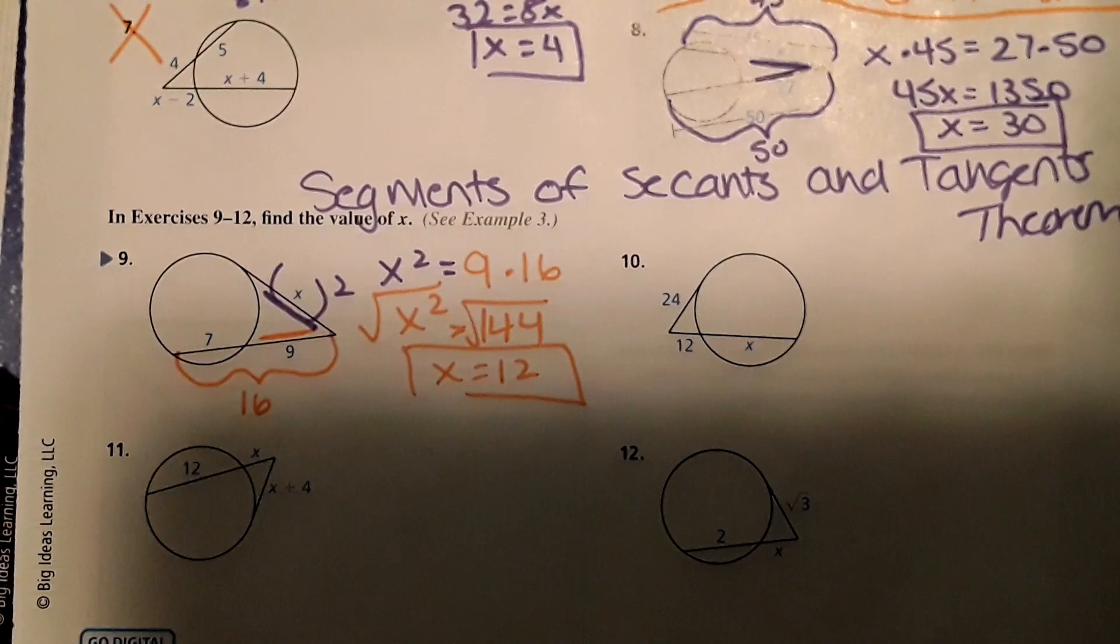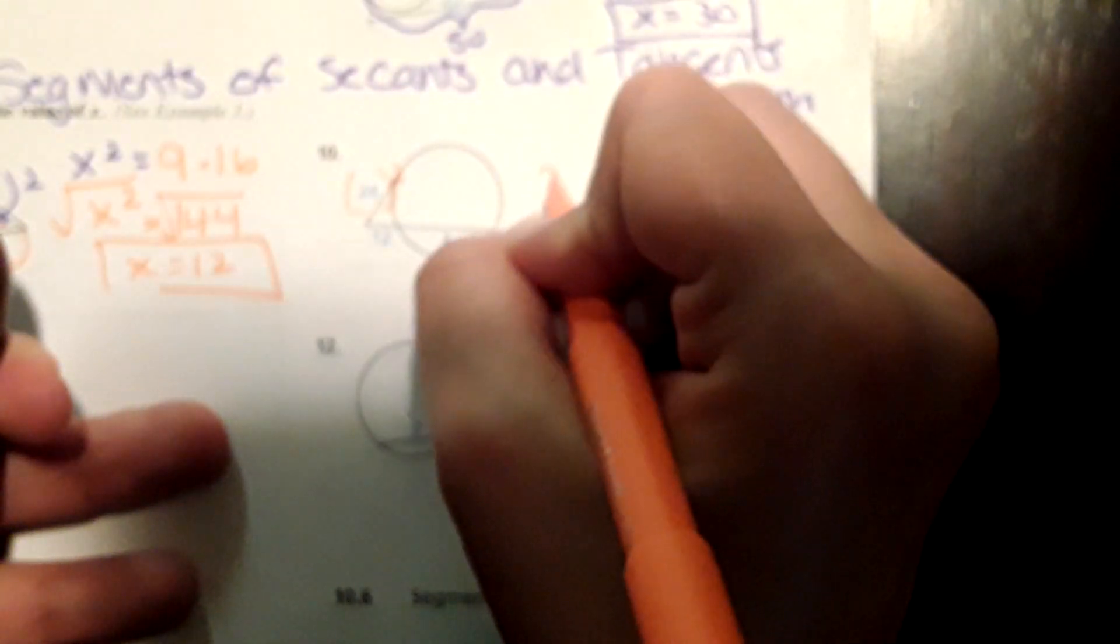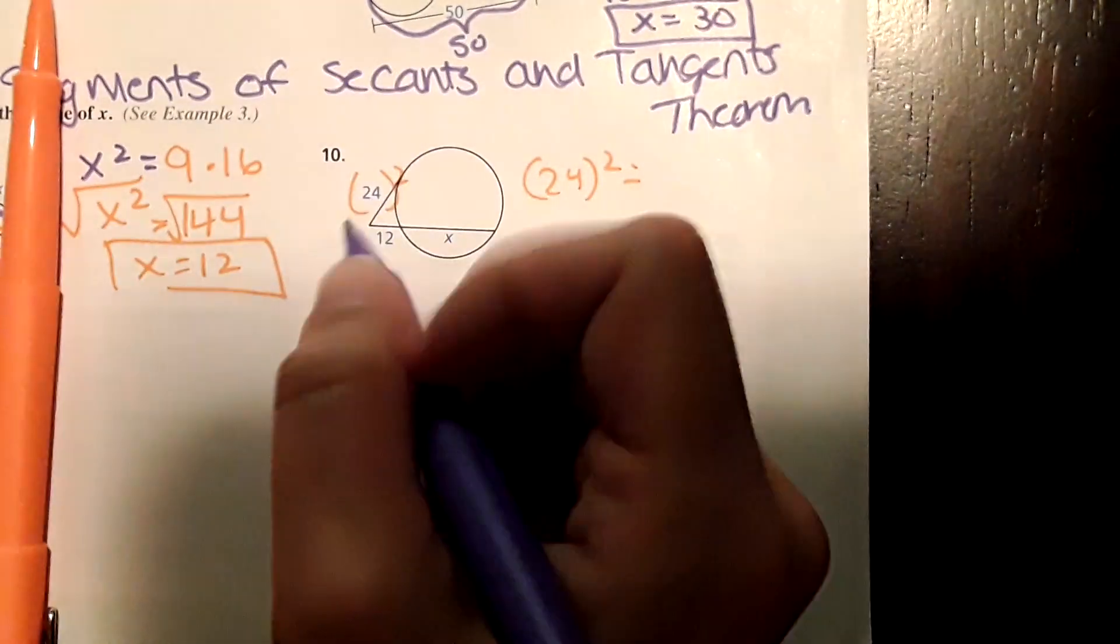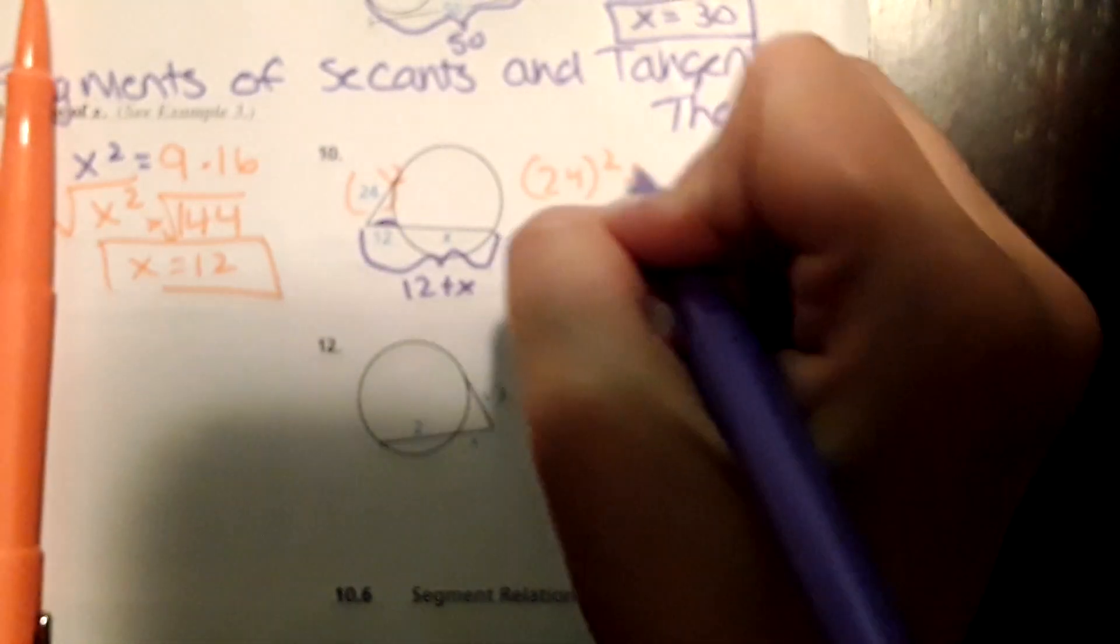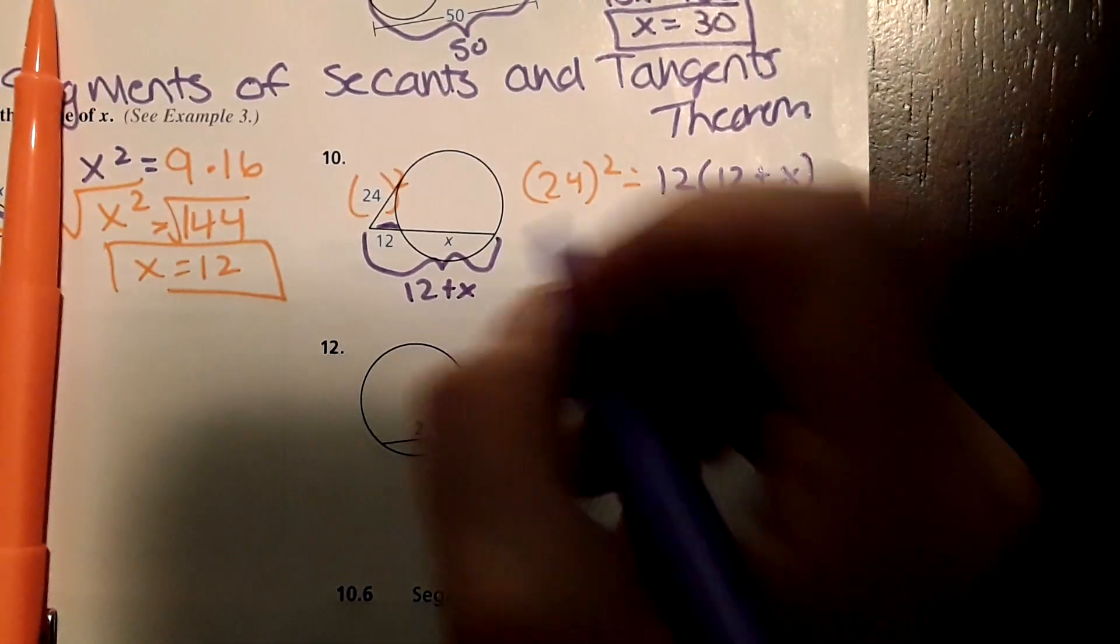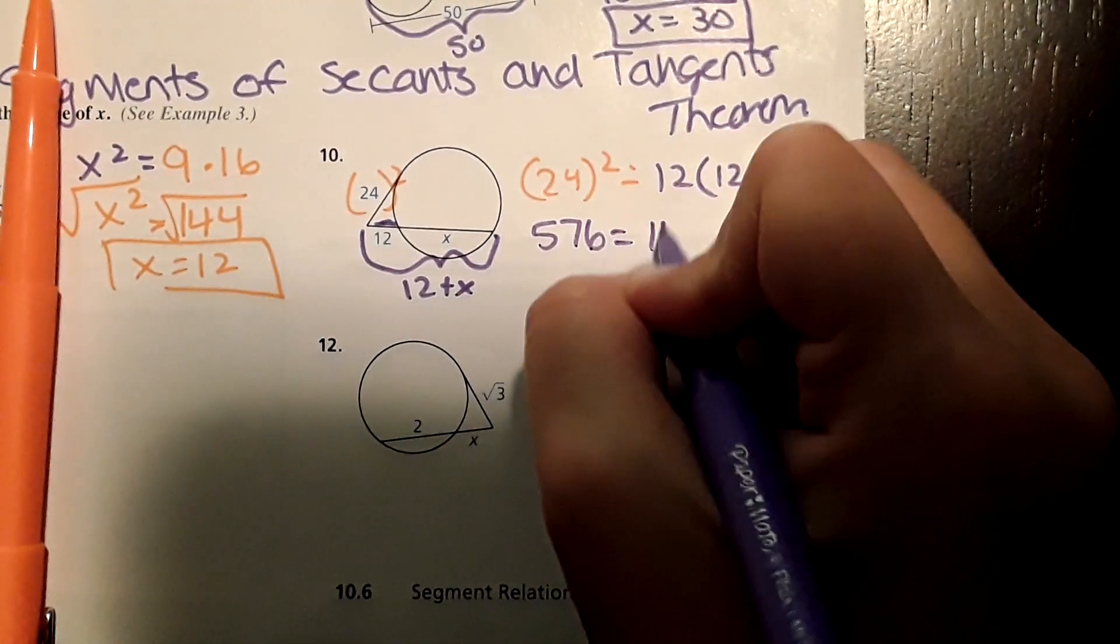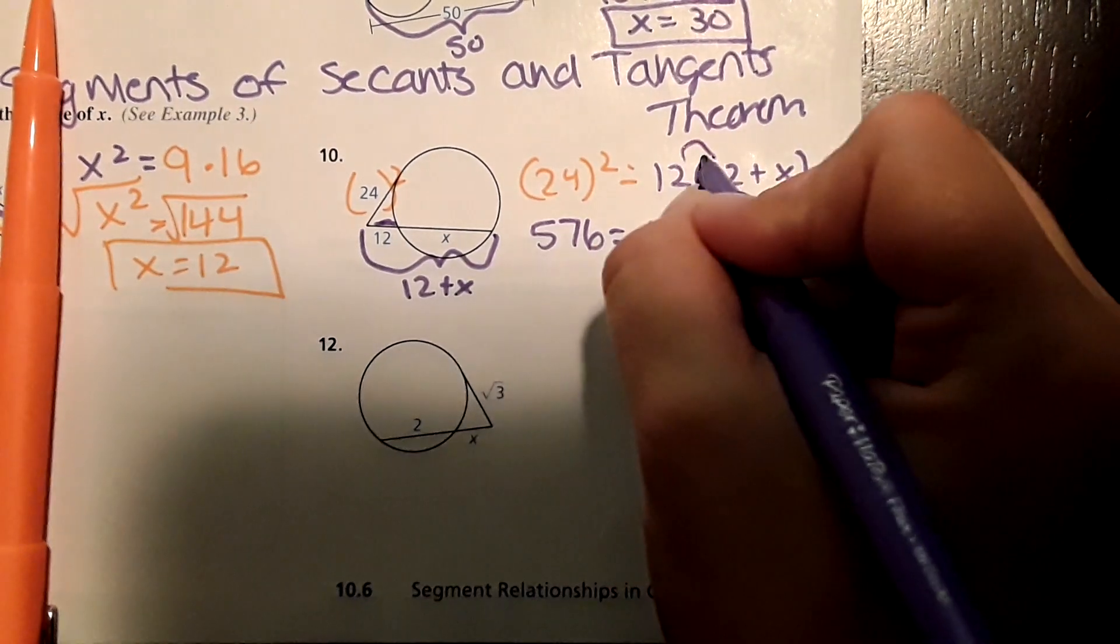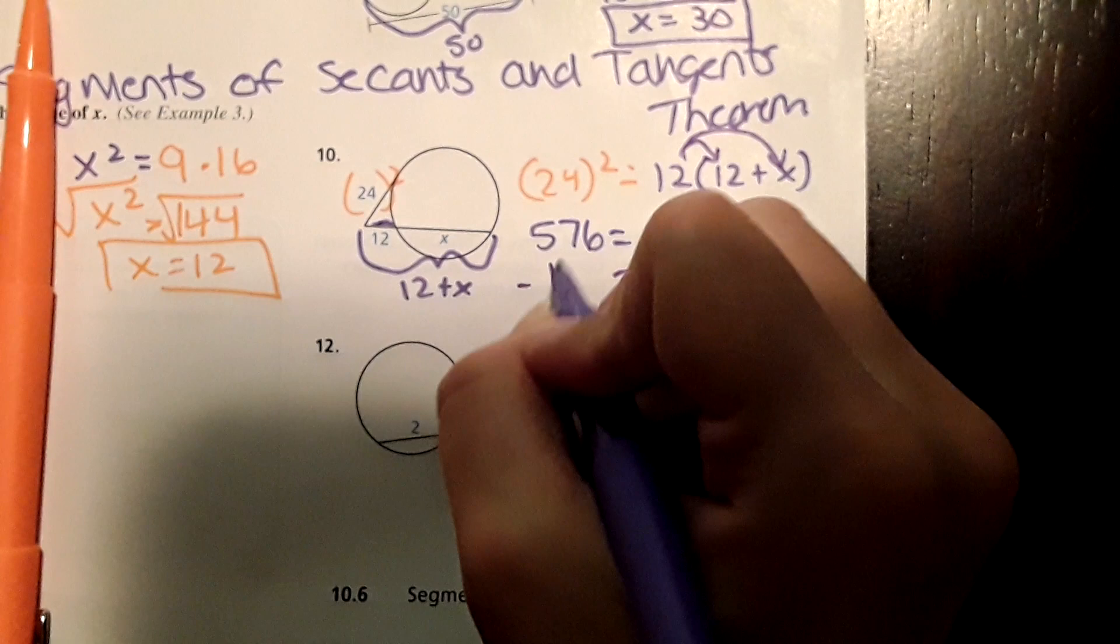Moving on to the next problem, number 10: same thing, we are going to square this. 24 squared equals this short side times the entire thing, which would be 12 plus X, so 12 times 12 plus X. 24 squared comes out to 576 equals 144 plus 12X—I'm just distributing this here. Then continue solving, and X equals 36.